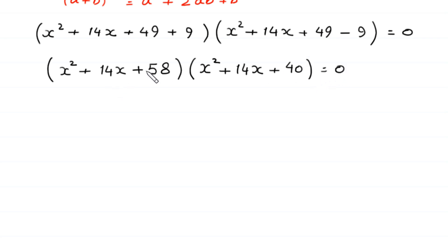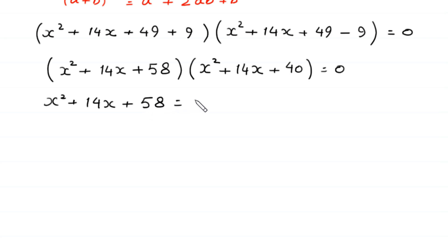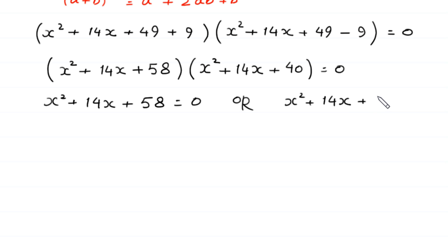From here, either this expression x squared plus 14x plus 58 is equal to 0, or this expression x squared plus 14x plus 40 is equal to 0.